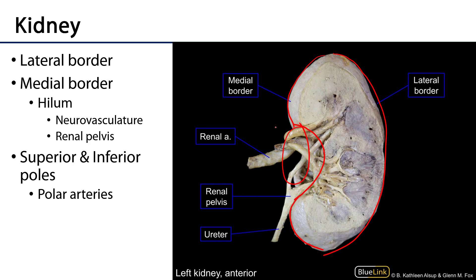There are also superior and inferior poles. The superior poles tend to be in association with the suprarenal glands, or adrenal glands. The inferior poles tend to be about two and a half to three and a half centimeters superior to the iliac crest. Sometimes there are special types of accessory renal arteries called polar arteries, which serve the regions of the poles — so keep your eyes out for those.